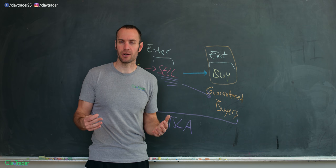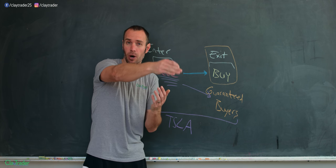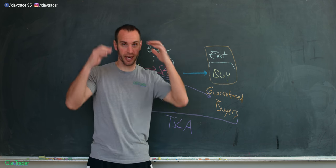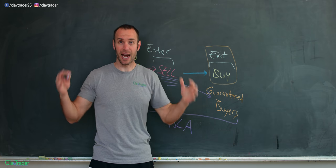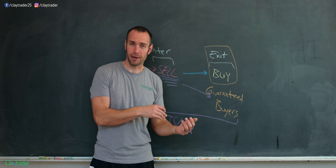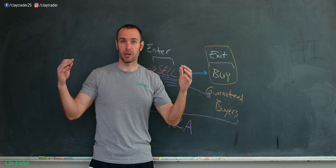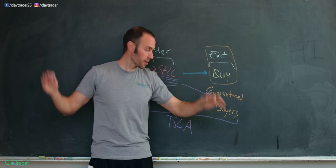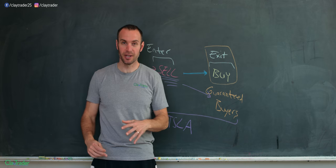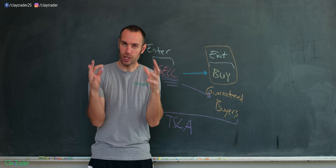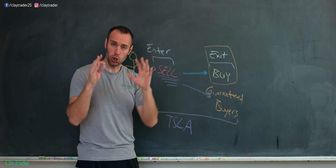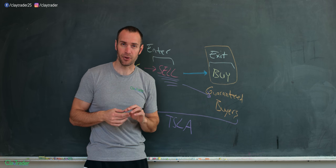Then you had other shorts saying, I can't take it anymore. I got to get out of this trade. So how do they get out of the trade? Well, they have to buy. So now you have a bunch of people buying to get out of the trade, which what? Causes the price to go up even further. Then you have more shorts, more guaranteed buyers. There's like, I got to get out. So do you see how this is a very explosive situation?